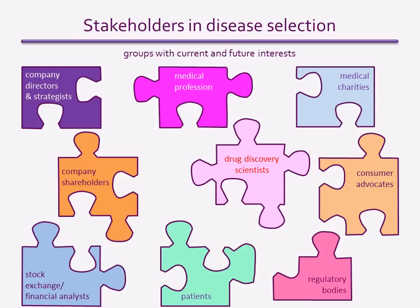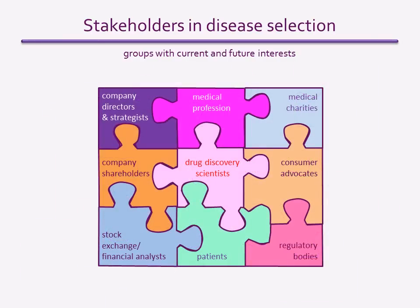When looking for a new drug target, it is generally intended for the treatment of a particular disease. There are many factors that influence how the decision is reached and what disease is decided upon. Stakeholders with vested interests in which diseases should be the focus for new treatments can have a large impact on the decisions made. They may lobby for particular diseases and can raise awareness of the need for treatment or provide funding for research into particular diseases. So the global effort to identify new drug targets results from the combined input of all stakeholders.